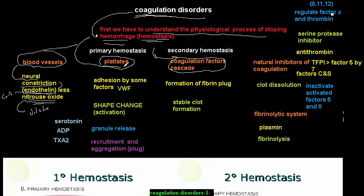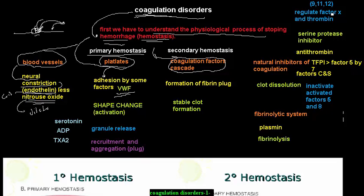Now let's move to the platelets. The platelets are the first to respond when we have bleeding, in a process we call primary hemostasis. What the platelets do is adhere to the blood vessel via a factor we call von Willebrand factor. The platelet will adhere to the torn blood vessel — one after another, they form a block. The platelets adhere via von Willebrand factor together with factor VIII to the blood vessel.